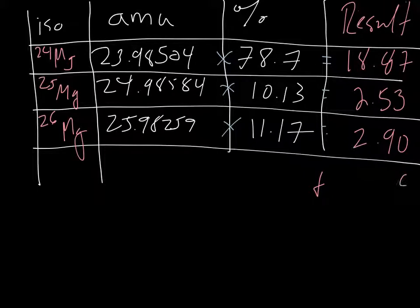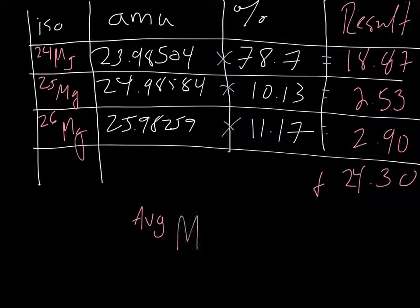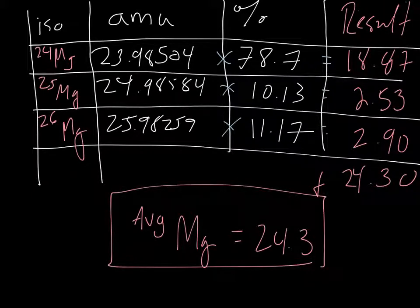So let's see, I get a 0, carry the 1, 3.4, 24. So I get an answer of the average for magnesium of 24.3. And that's my final answer.